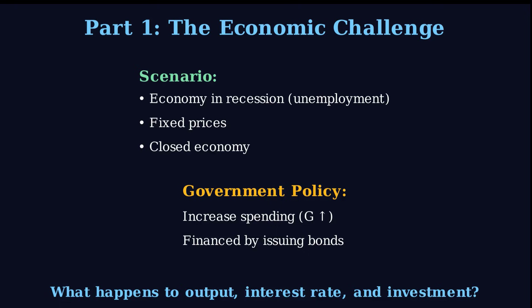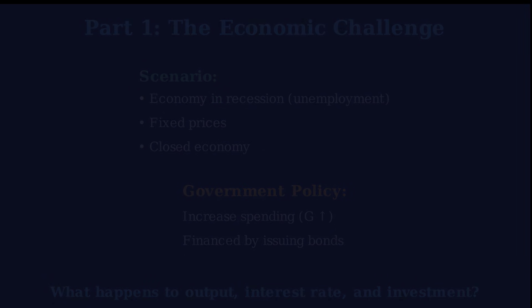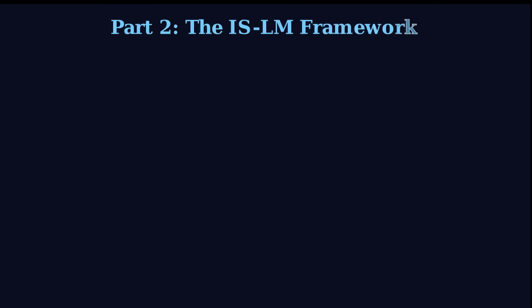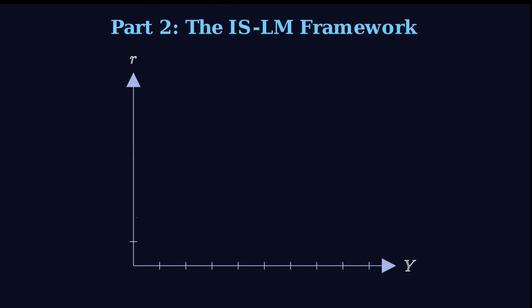Let's start at the very beginning. Before any of this happens, before the spending bill, where is the economy sitting in this IS-LM framework? We begin at the initial equilibrium — let's call it Point A. That's where the IS and LM curves cross, and that sets our starting interest rate and output level. The source material really emphasizes the context: this equilibrium point is positioned significantly to the left of full employment. And that initial placement is everything — it is the entire ballgame.